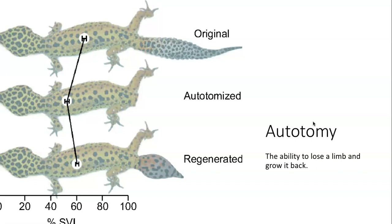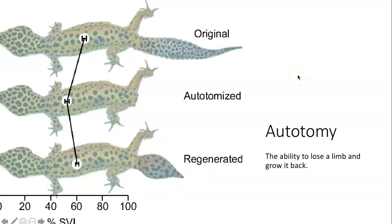The last thing I want to talk about is autotomy — the ability to lose a limb and grow it back. Here's a leopard gecko. These guys are famous for this: if something grabs them by the tail, it'll just pop the tail off — that's called being autotomized. Over about a month, they will grow a tail back. It doesn't look exactly like the original one, but it does grow back, and the organism can have a relatively normal life. It's an interesting way to give something up to the predator, run away and escape, and then grow it back.